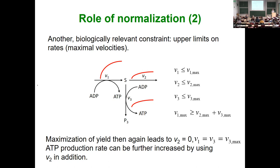There is a good paper by the group of Uwe Sauer in Zurich where they compared FBA, ROOM, MOMA, and other criteria on gene deletion experiments, showing which gives the best predictions. Probably it's always trial and error — take a criterion and see what comes out. It is probably difficult to reverse-engineer the optimality criterion from data; I don't think it's possible so far.